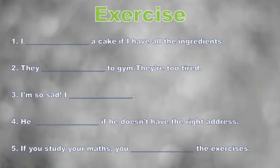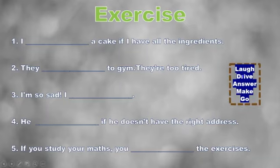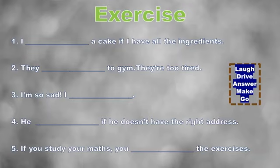We have five sentences and different verbs: laugh, drive, answer, make, and go. You have to write future abilities. Pay attention — some of them are positive and some are negative. You have to read the whole idea and then decide what would be the right word.